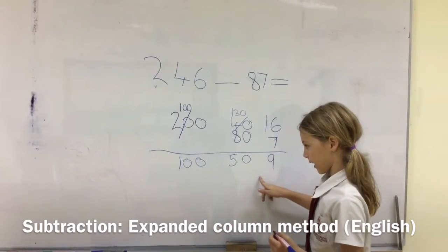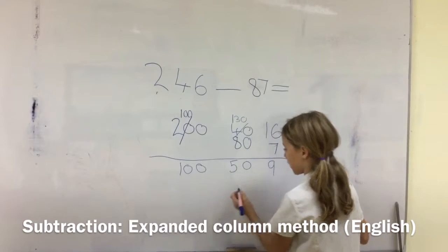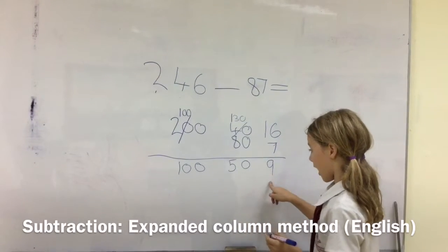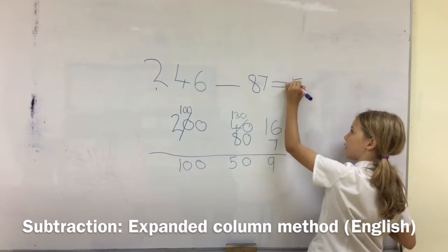So, next, we add them together. So, 100 plus 50 equals 150, plus 9 equals 159. So, the answer is 159.